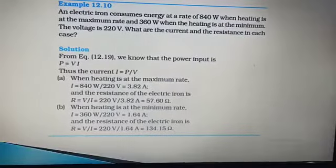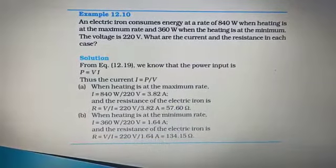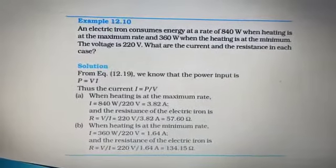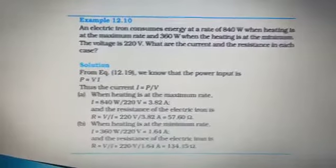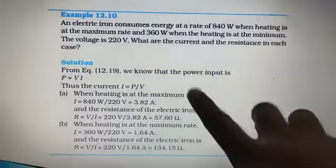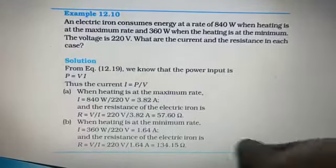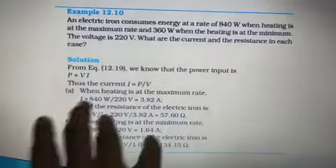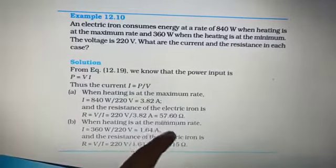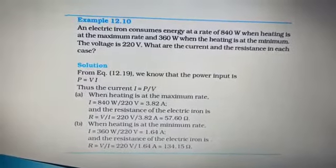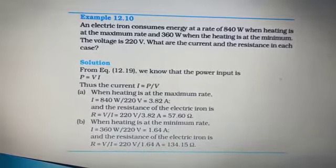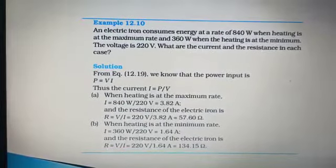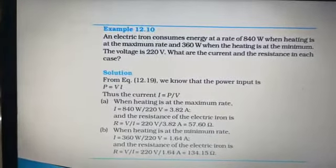Students, as you all can observe in the solution, all the answers are given up to two decimal places. Please make note in the final board examination, you have to give your answers up to two decimal places. After the decimal point, two values have to be written. And one more thing that you all need to observe, they write 3.82A, 57.60 ohm. Writing the SI unit is extremely important in the board exam. They will cut half mark if you do not write the units. Please make it a habit right from the starting of your 10 standard to give your final answers up to two decimal places with the SI units.